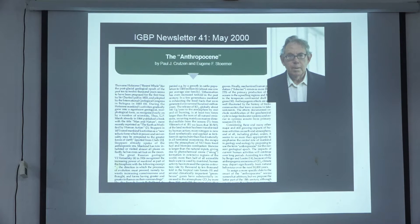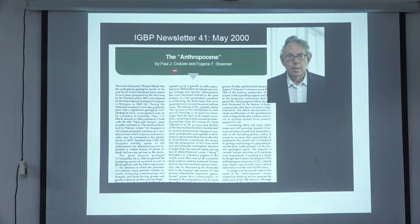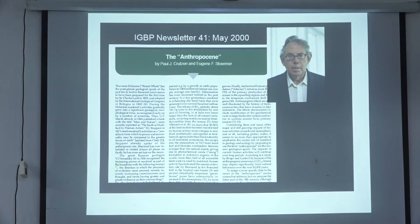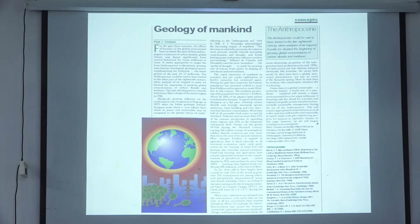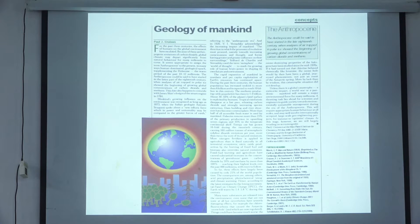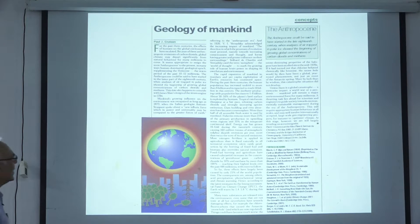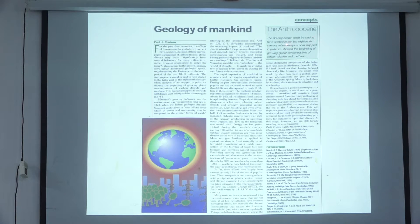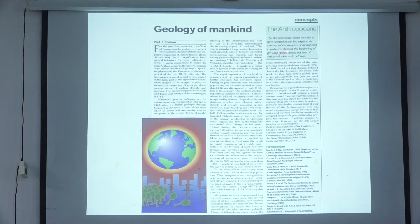The two one-page articles were the IGBP newsletter in May 2000 where Crutzen formally used the word 'Anthropocene' — that was the first time it was used, co-authored with Eugene Stoermer. This was followed up by a one-page article in Nature called 'Geology of Mankind,' which is now a very well-cited paper. In that article it states: 'The Anthropocene can be said to have started in the late 18th century, when analysis of air trapped in polar ice showed the beginning of growing global concentrations of carbon dioxide and methane.'